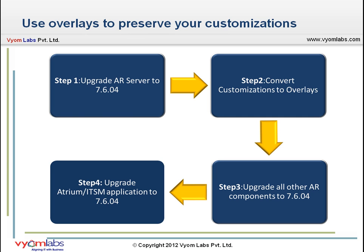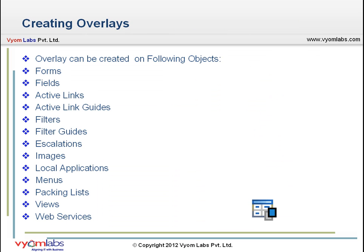Now let's look at creating overlays. Overlays can be created for the following objects: forms, fields, active links, active link guides, escalations, filters, filter guides, local applications, menus, packing lists, and web services.